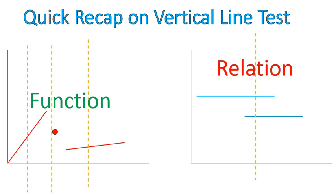So you'll see that with a line, as long as it's not a straight vertical line, it would be a function, because a vertical line would only touch it in one place.